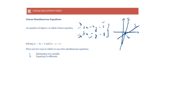How are we actually going to solve them and get values of x and y? There are two methods: elimination of a variable, or equating the coefficients. We'll look at both — whatever works for you. For elimination of a variable, we use one equation.